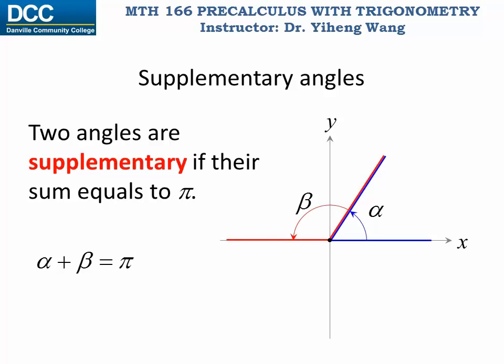Similarly, if the sum of two angles equals π, which is 180 degrees, then these two angles are known as supplementary angles. Note that in this case, angle beta is not drawn in its standard position.